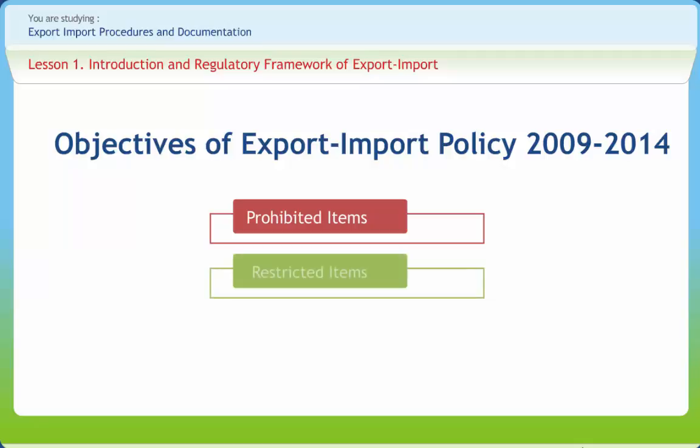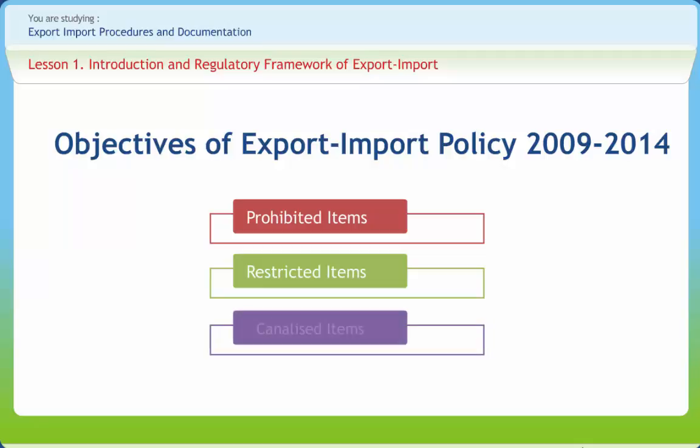Restricted items include any goods the export or import of which is restricted through licensing; these may be exported or imported only in accordance with the license issued in that behalf. Canalized items include any goods the import or export of which is canalized; these may be imported or exported only by the canalizing agency specified in the negative list. However, the Director General of Foreign Trade may grant a license to any person to import or export any canalized goods.